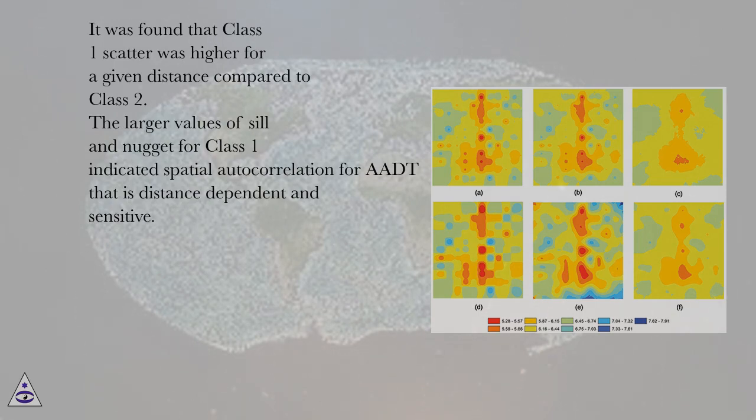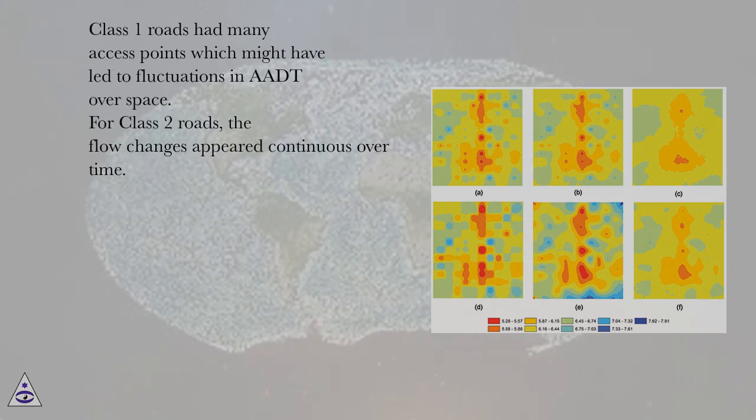The larger values of C1 and nugget for class I indicated spatial autocorrelation for AADT that is distance-dependent and sensitive. Class I roads had many access points which might have led to fluctuations in AADT over space.